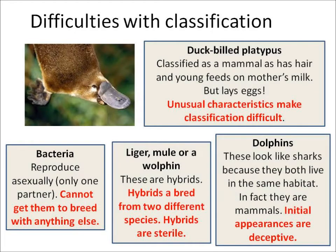You also need to know that there are difficulties with classification, and it's not necessarily straightforward. Look at the duck-billed platypus. It's got hair, and it feeds on its mother's milk, so you would have thought we'd classify it as a mammal. But it also lays eggs, unlike other mammals. So unusual characteristics make classification difficult.